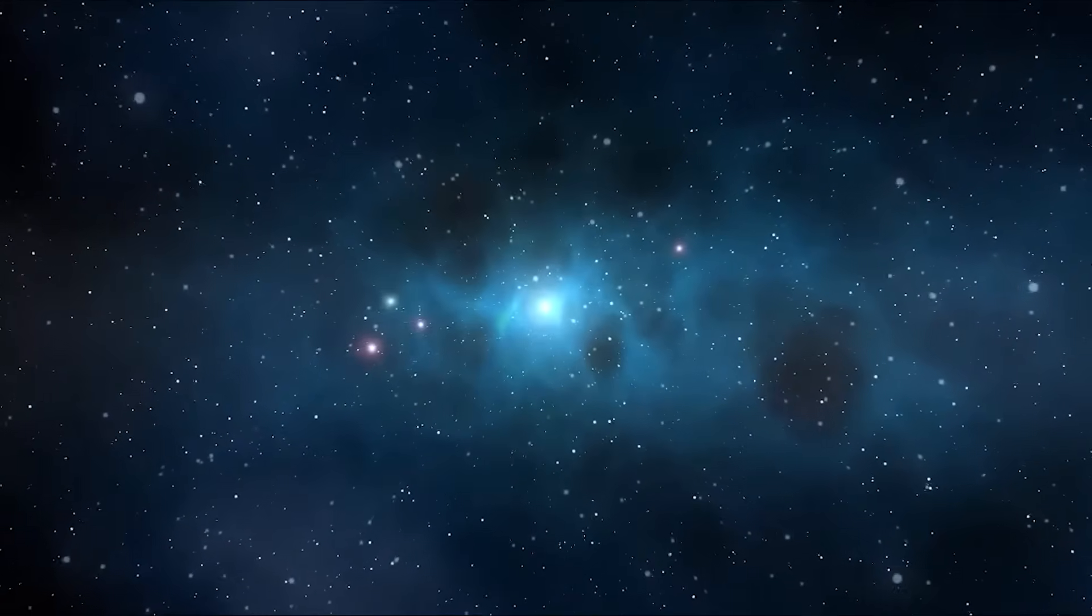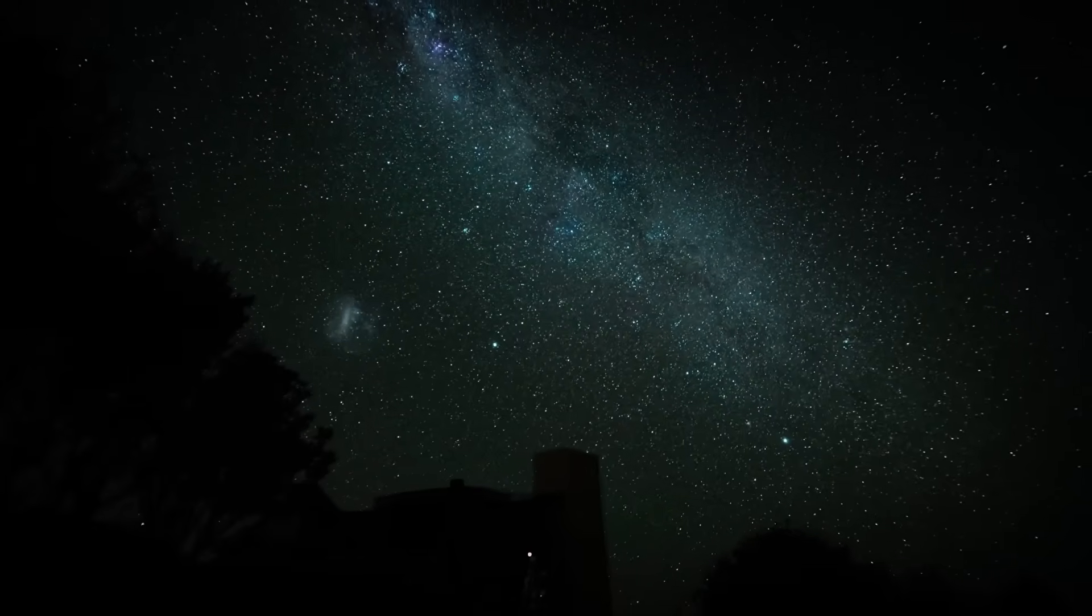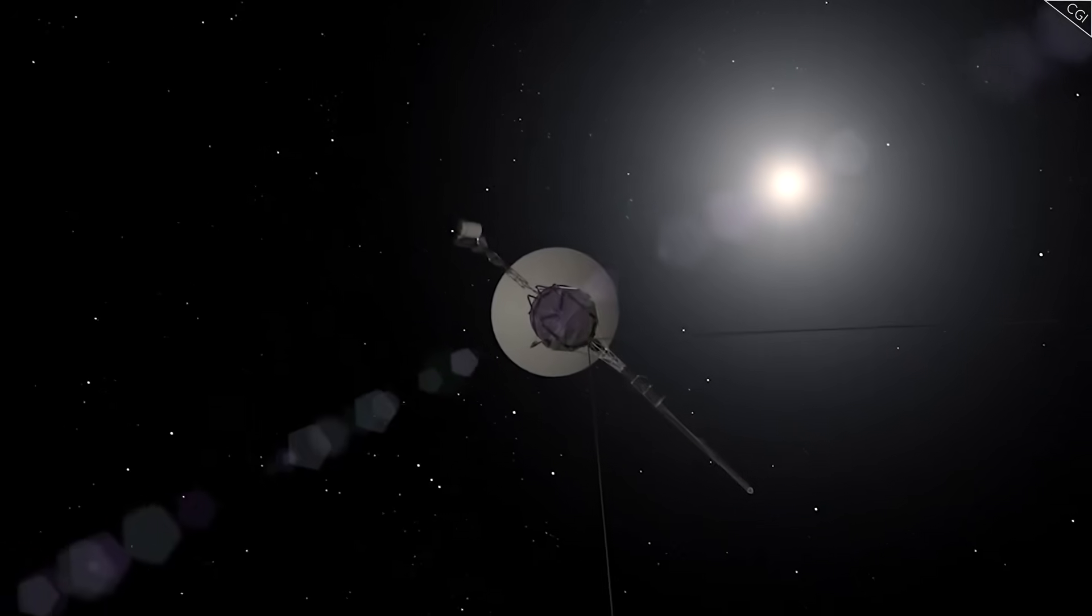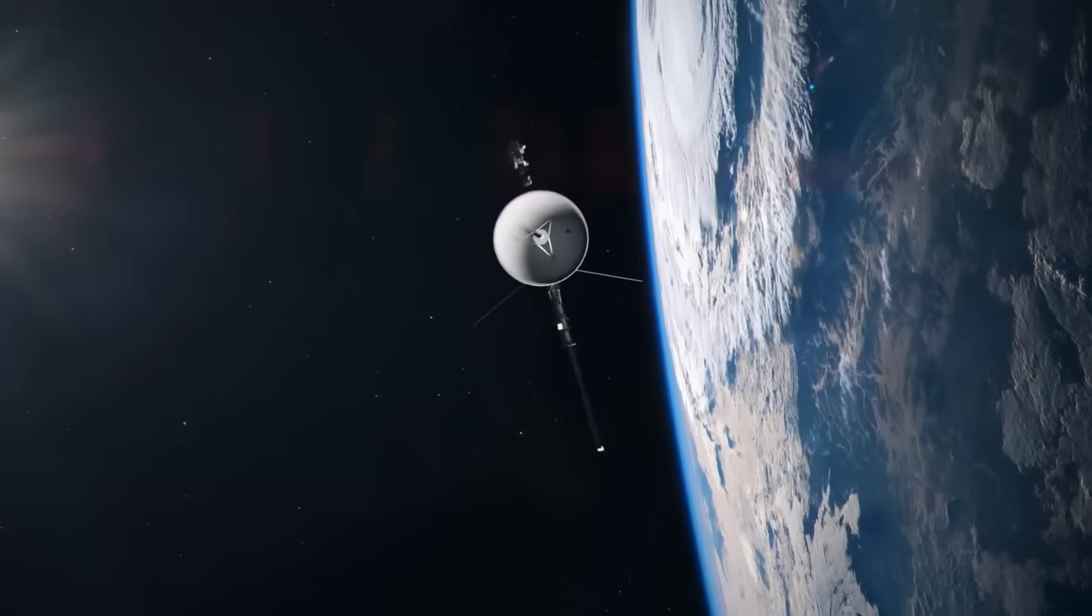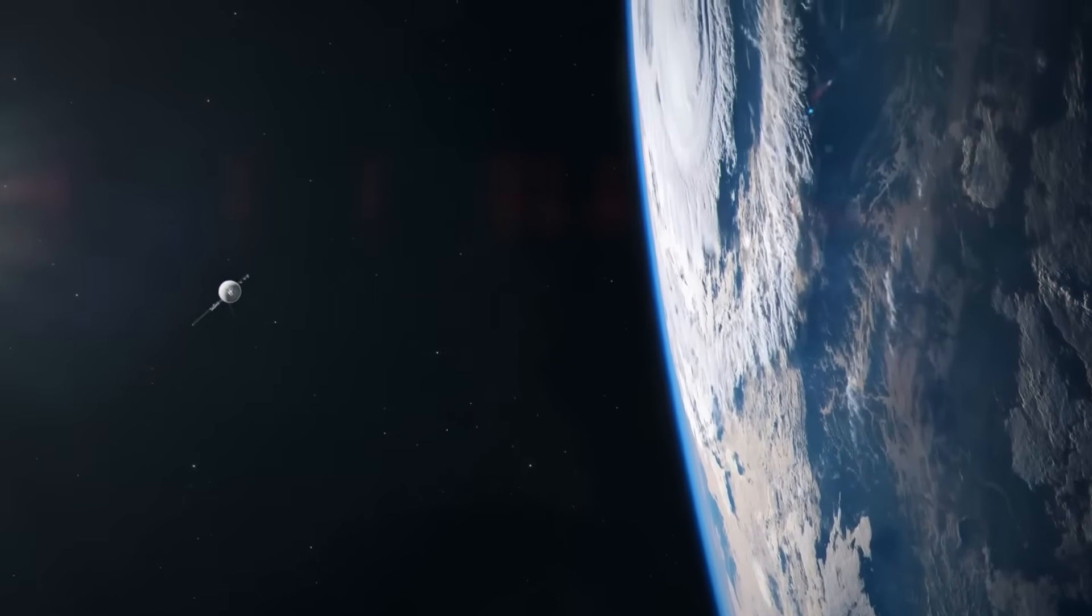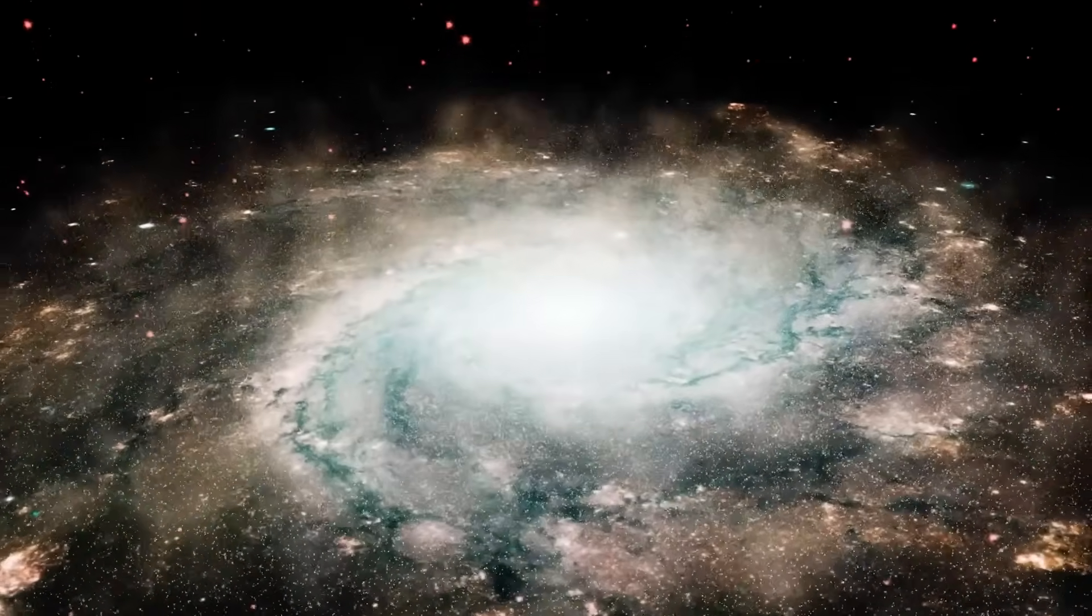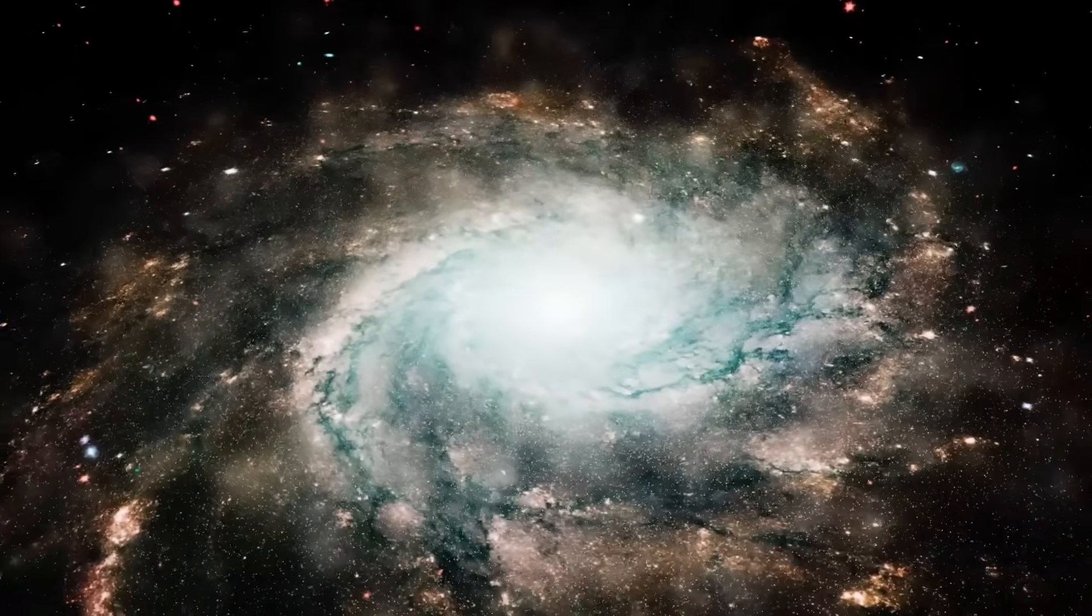In the endless black between the stars, where the sun's warmth no longer reaches and the silence has lasted for billions of years, two of humanity's oldest machines drift alone. For decades, Voyager 1 and Voyager 2 have been our quiet emissaries to the unknown, their ancient instruments still whispering home across distances so vast that a single message takes nearly a day to arrive.